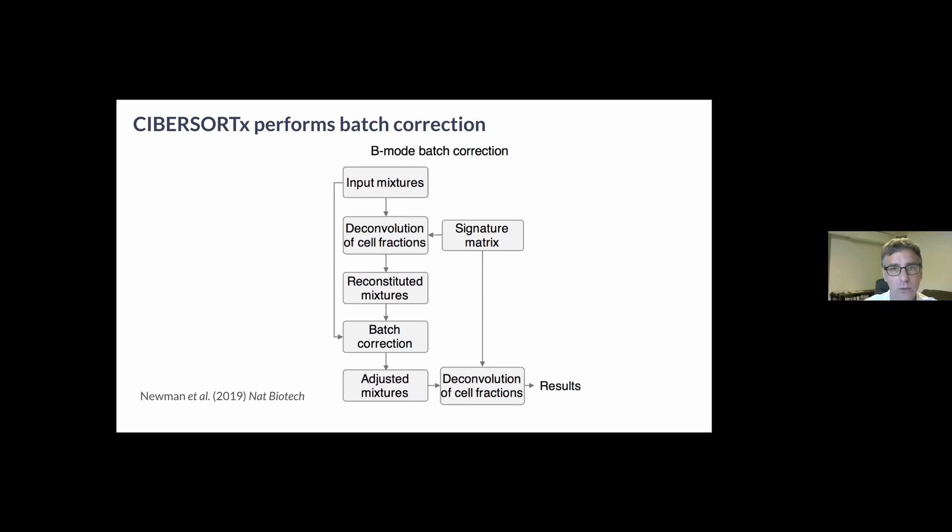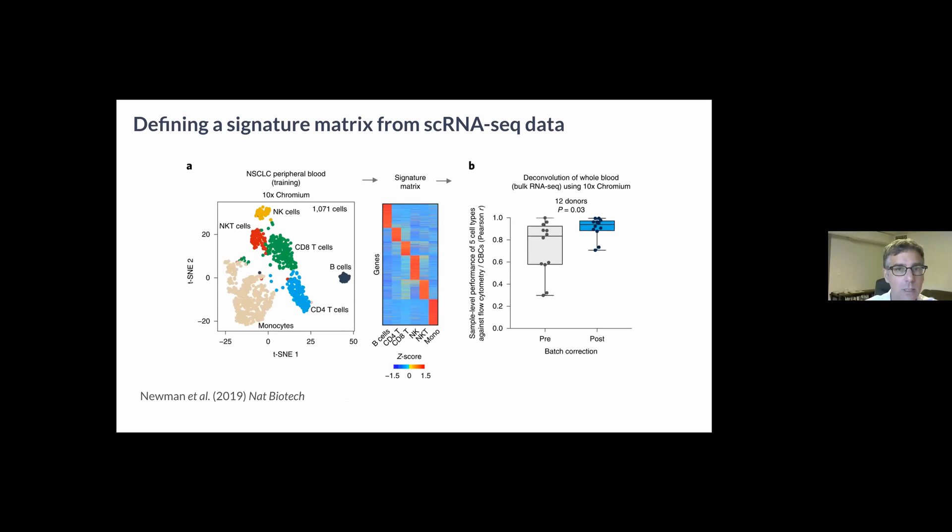I want to emphasize here that we didn't do any retraining of either of these methods. A second major difference is the batch correction that's applied by CIBERSORTx, which is intended to combat cross-platform differences. For example, in the manuscript they look at five prime and three prime biases.